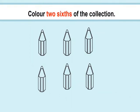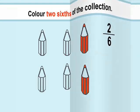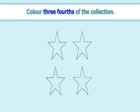Color two sixths of the collection. The fraction two by six means out of six pencils, color two pencils, so we should color two pencils. Color three fourths of the collection. The fraction three by four means out of four stars, color three stars, so we should color three stars.